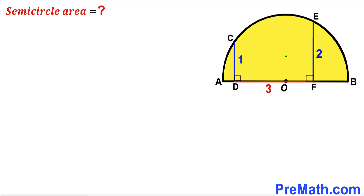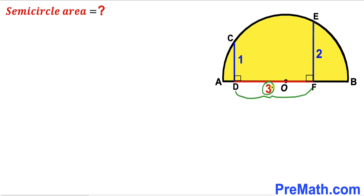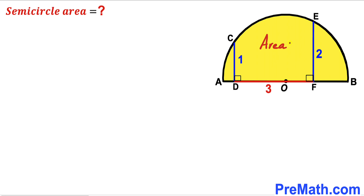Welcome to PreMath. In this video we have a yellow shaded semicircle with center O, along with perpendiculars CD and EF inside this semicircle. CD is one unit, EF is two units, and both perpendiculars are three units apart. The diameter of this semicircle is AB, and our task is to calculate the area of this yellow shaded semicircle.